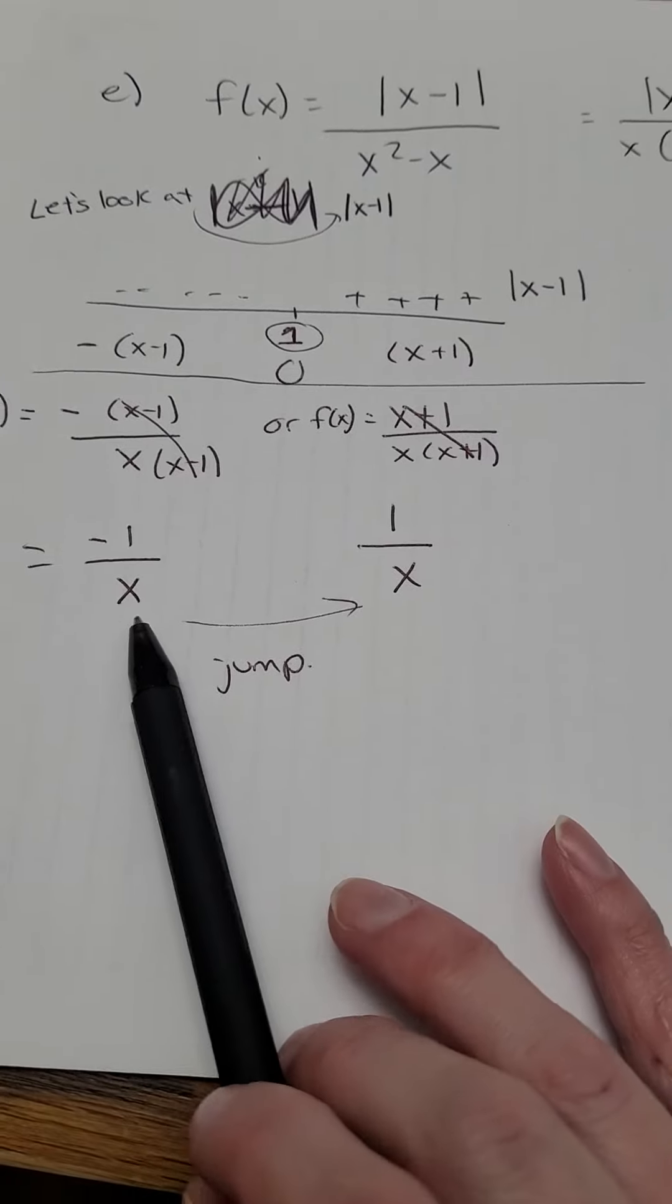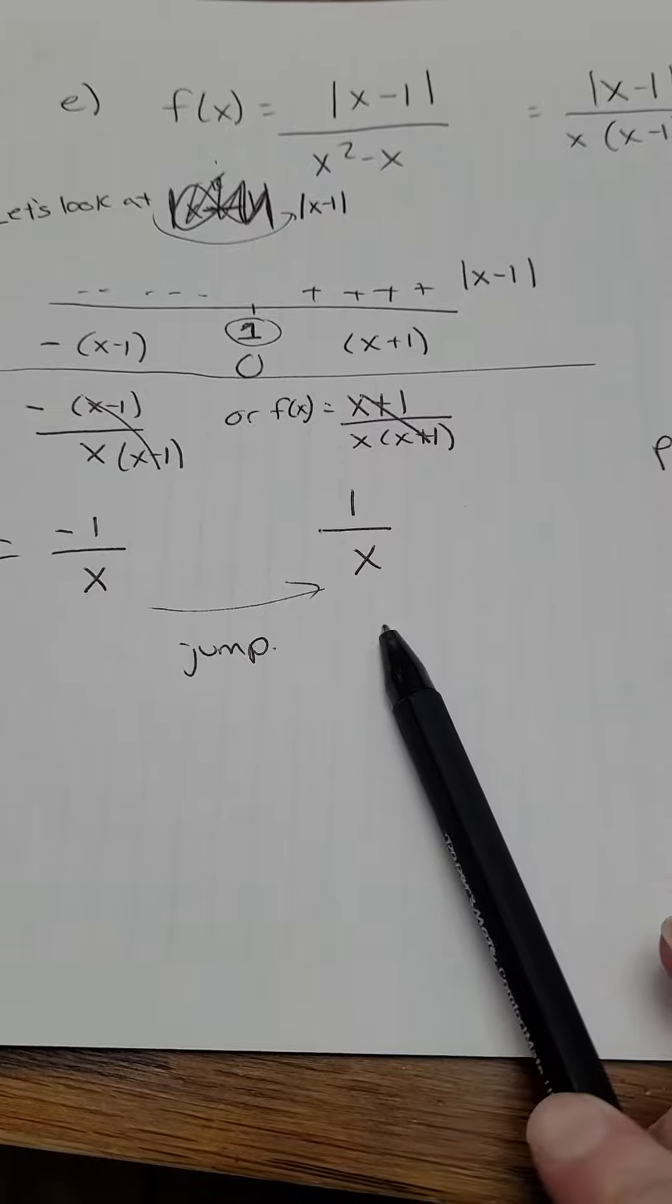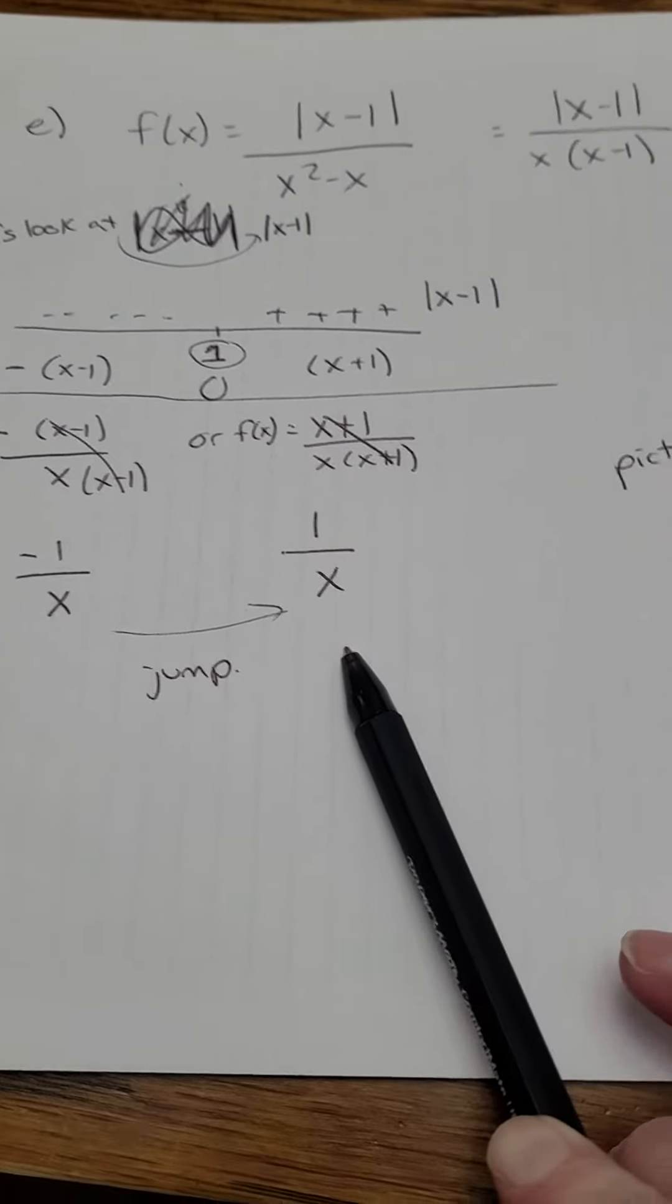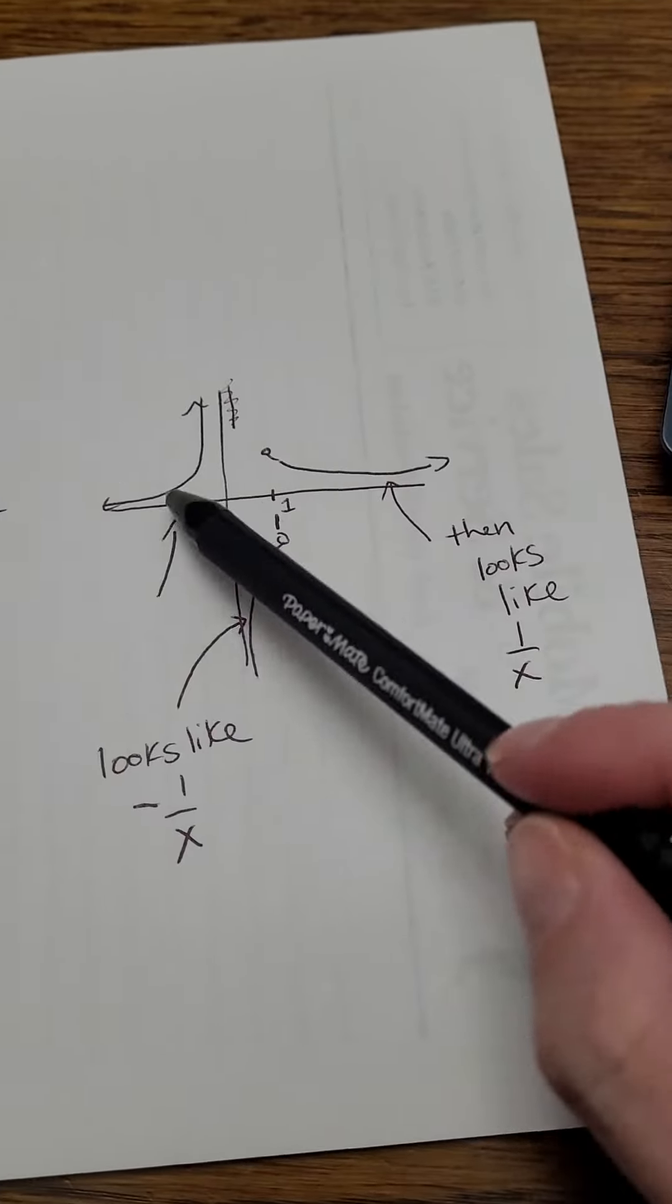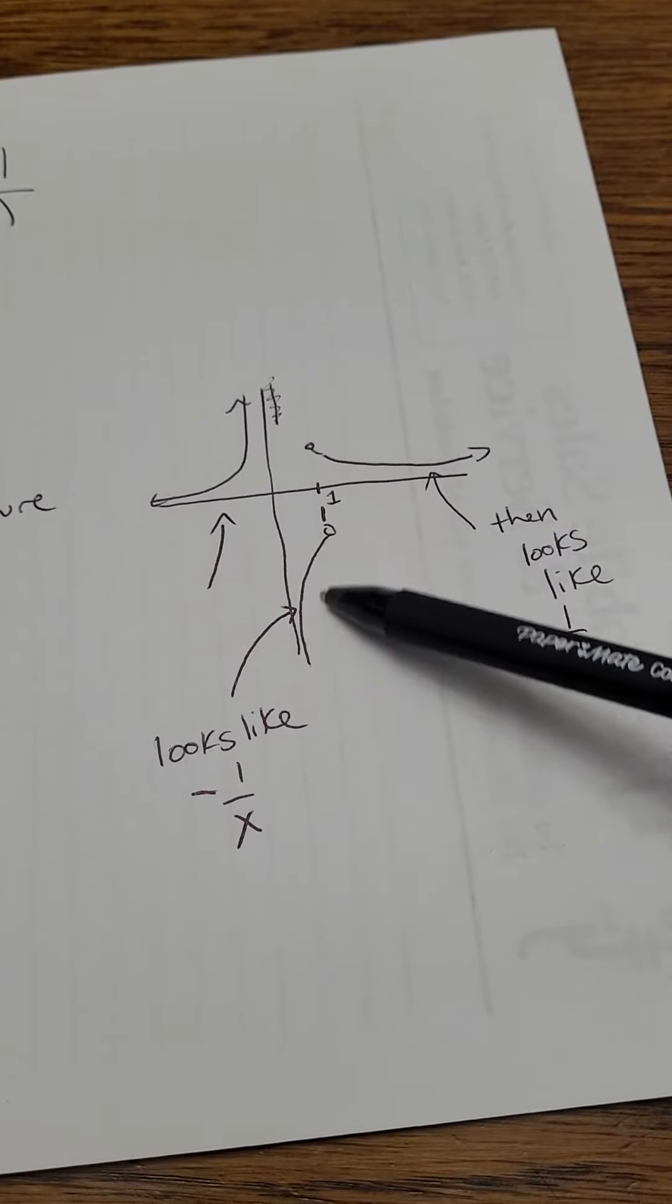So it looks like negative 1 over x up until 1, and then at 1, it looks like 1 over x. So I drew a picture of what that would look like. So here I started doing the picture of negative 1 over x.